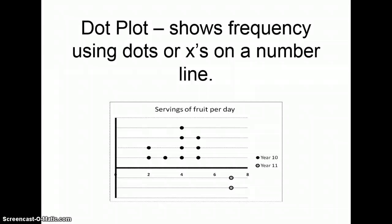Dot plots show frequency using dots or x's on a number line. Now the dot plot that you see here is actually a double dot plot because it's showing the number of servings of fruit per day for two different groups of students. The 10-year-olds are on top, and the 11-year-olds are below.